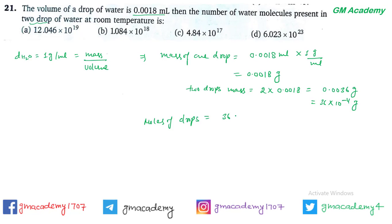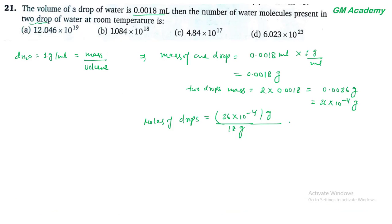Moles of drops निकालते हैं: 36 × 10⁻⁴ divided by molecular weight 18 gram = 2 × 10⁻⁴ moles. तो हमारे पास 2 drops water में 2 × 10⁻⁴ moles available हैं।